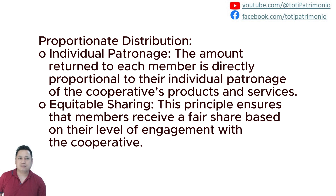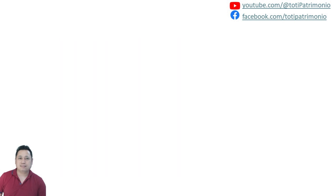The proportionate distribution of patronage refund is based on individual participation in the cooperative. For example, a member who paid a total interest of 20,000 will not receive the same refund as a member who paid 50,000 — but they will receive equitably according to their proportion of participation in patronizing the cooperative's products. I will explain later how to compute this so you can see how the amounts differ.